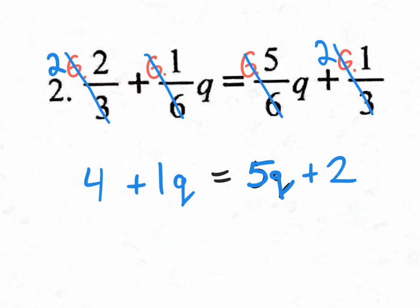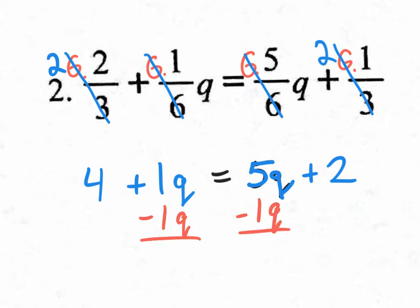So we got rid of the fractions. Now let's get Q by itself on one side. You could either subtract 5Q and move it over here, or you could subtract 1Q and move it over there. I'm going to subtract the 1Q and move it to the right side — I don't want variables on both sides. What I do to one side, I do to the other. And 5Q take away 1Q is 4Q.